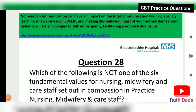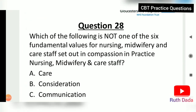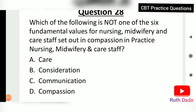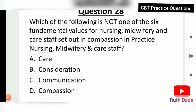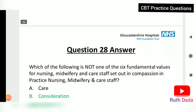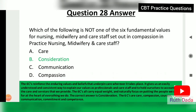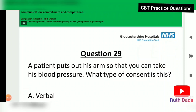Question 28: Which of the following is not one of the six fundamental values for nursing and care staff set out in Compassion in Practice? The answer is consideration. The six Cs are: Care, Compassion, Courage, Communication, Commitment, and Competence. These reinforce the enduring values and beliefs that underpin care wherever it takes place.